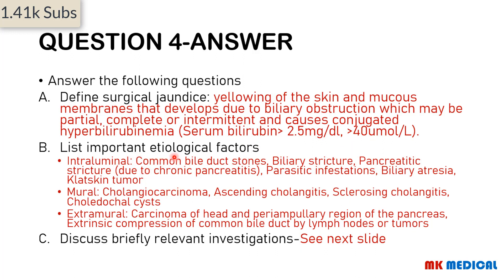Etiological factors can be classified as intraluminal, mural, or extramural. Intraluminal causes include common bile duct stones, biliary strictures, pancreatic strictures from chronic pancreatitis, parasitic infections, biliary atresia, and Klatskin tumors. Mural causes include cholangiocarcinoma, ascending cholangitis, sclerosing cholangitis, and choledochal cysts. Extramural causes include carcinoma of the head of the pancreas and periampullary region, and extrinsic compression of the common bile duct by lymph nodes or other tumors.